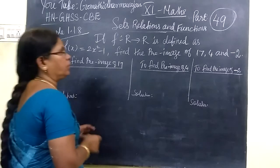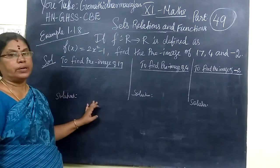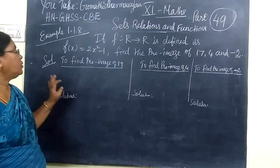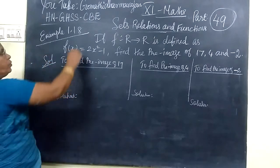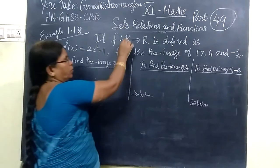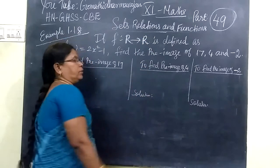Coming to the next question, this is part 4.9. We are taking sets, relations, and functions, example 1.18. We are given the question: F: R to R, where R means real function.